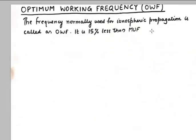This is going to be the last term that we will discuss in ionospheric propagation. It is the frequency used normally for ionospheric propagation. As compared to MUF, OWF is 15% less than MUF, and the reason for that is pretty simple.